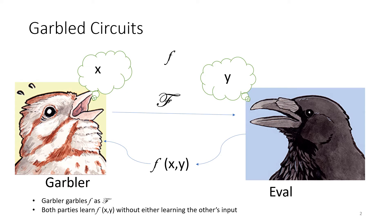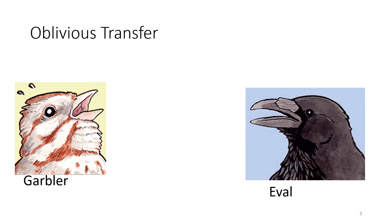Here I'm glossing over a lot of details about how this evaluation will be done, but we'll see a little bit more about that in the upcoming slides. An important sub-protocol to garbled circuits is oblivious transfer.